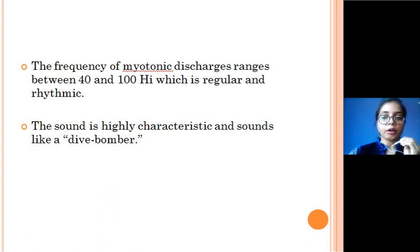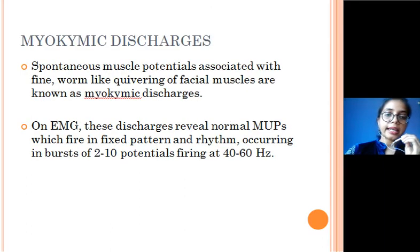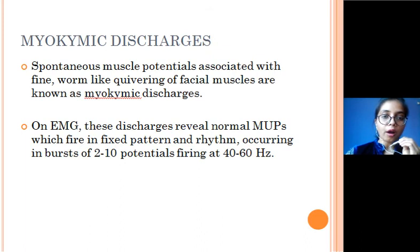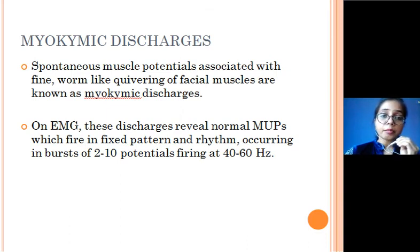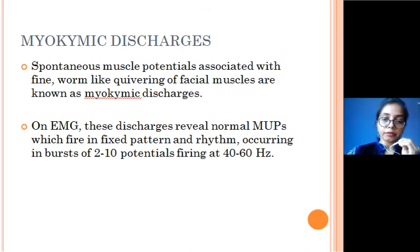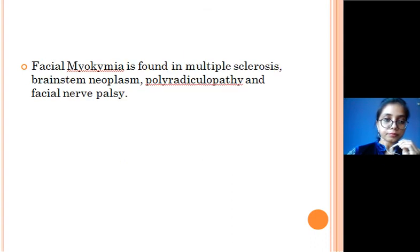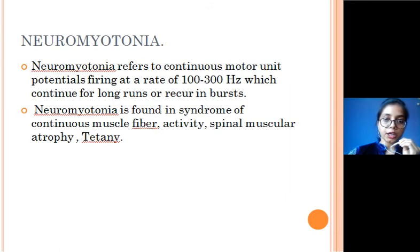The next type is myokymic discharges. As the name suggests, these are slow worm-like movements or worm-like discharges, specifically seen in the facial muscles. On EMG, these discharges reveal normal motor unit potentials and tend to fire in a fixed pattern and rhythm, occurring in bursts of 2 to 10 potentials firing at a frequency of 40 to 60 hertz. Facial myokymia is specifically found in multiple sclerosis, brainstem neoplasms, polyradiculopathy, radiculopathy, and facial nerve palsy.